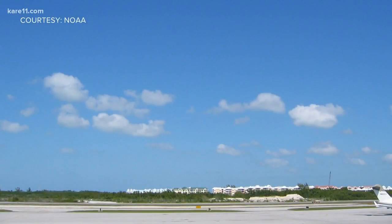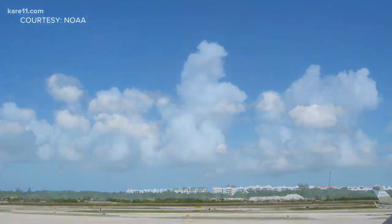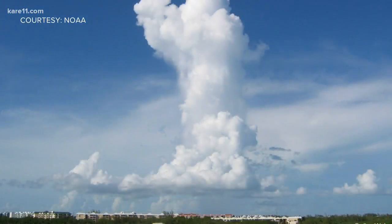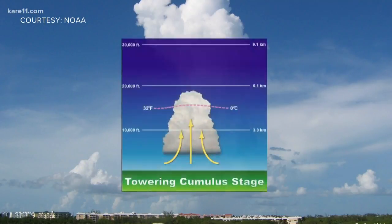This is how they form: early in the day we will have a field of cumulus clouds in the sky. After a few hours, by the early afternoon, a few of these clouds will start to get much taller. This is stage one, or the towering cumulus stage.